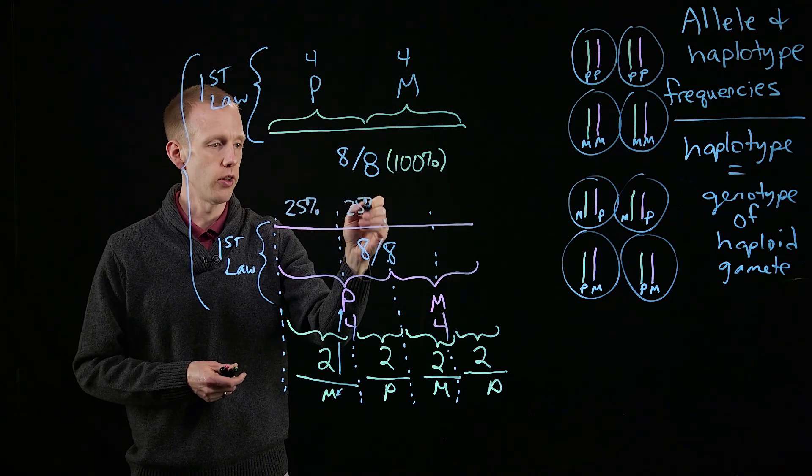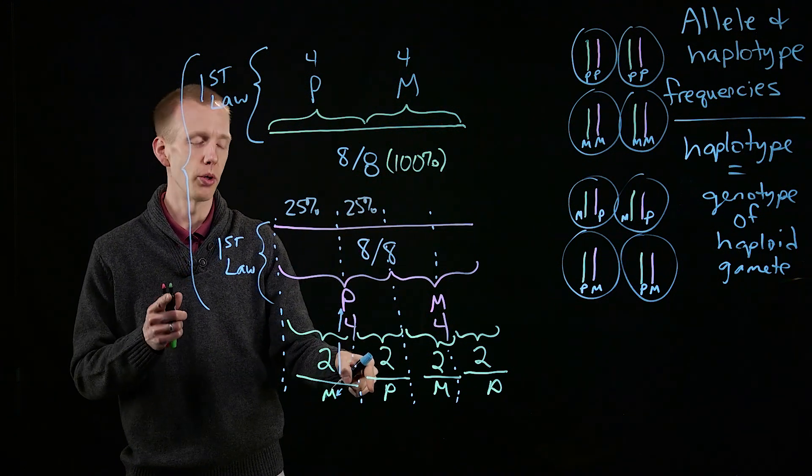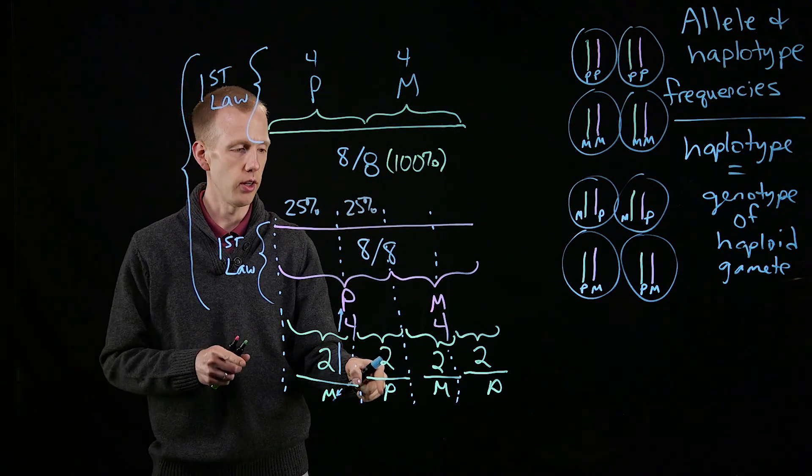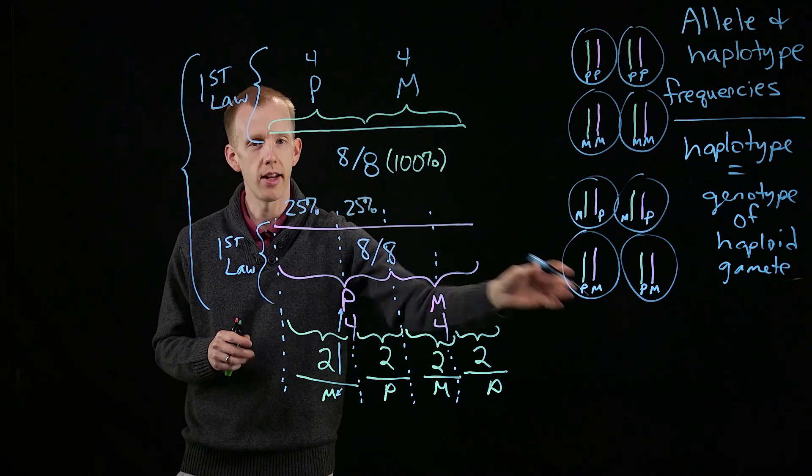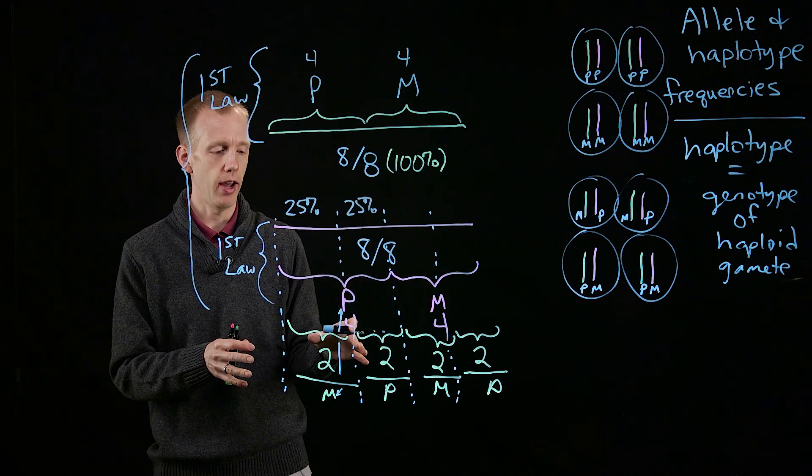And, as we discussed earlier then, pink chromosome paternal, green chromosome paternal, will be another 25% of the gametes. So we're just taking these data from the genotypes or haplotypes of the gametes and drawing them in a graphical fashion.